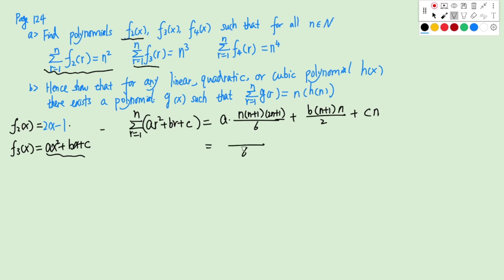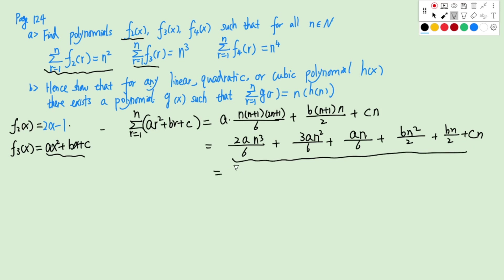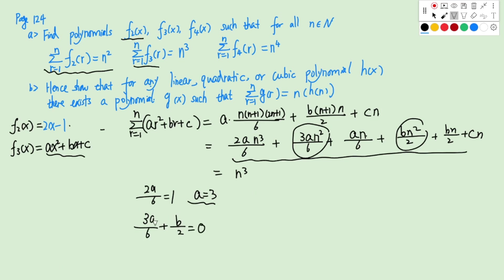Expanding: (2A/6)N cubed plus (3A/6)N squared plus (A/6)N plus (B/2)N squared plus (B/2)N plus CN, all equal to N cubed. Matching the cubic term: 2A/6 equals 1, so A equals 3. For the quadratic terms (which must be zero): 3A/6 plus B/2 equals 0, so B equals negative 3.